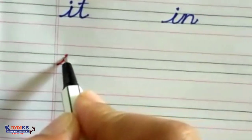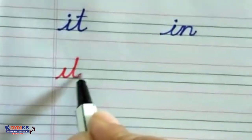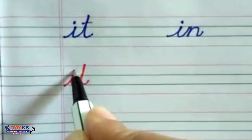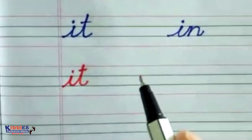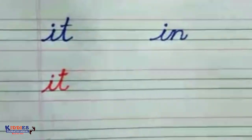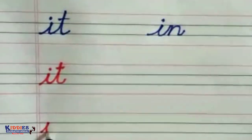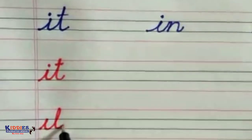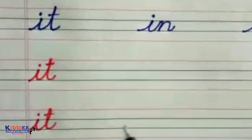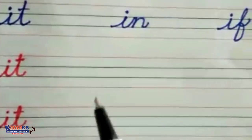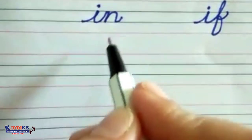Then let's learn how to write 'it'. For this we have to write the letter 'i', then 't'. Once again: 'i' then 't', that's 'it'.